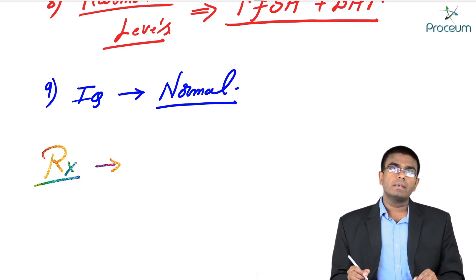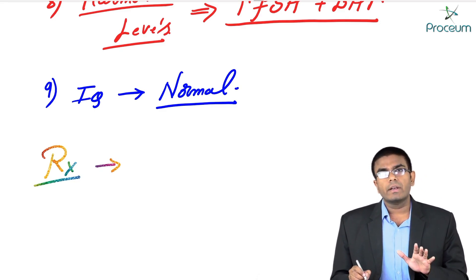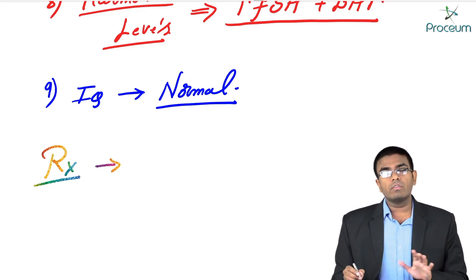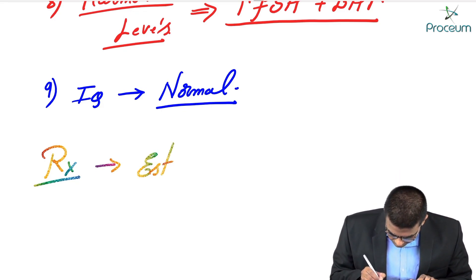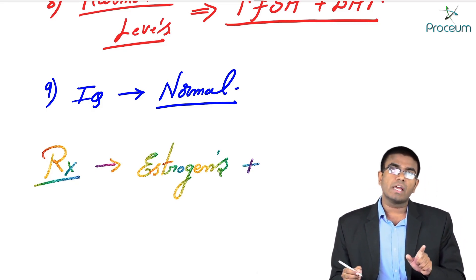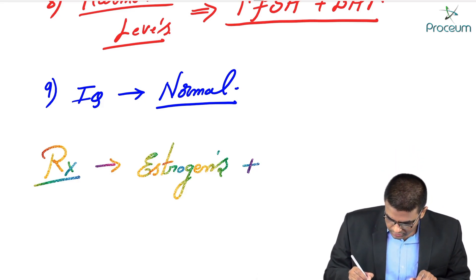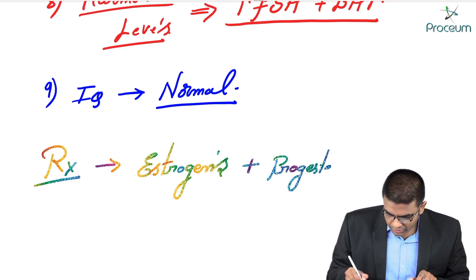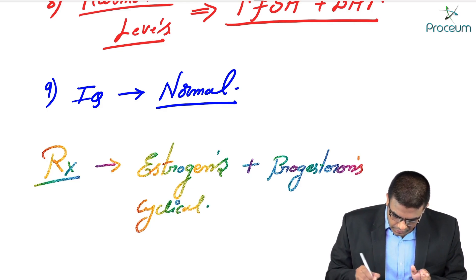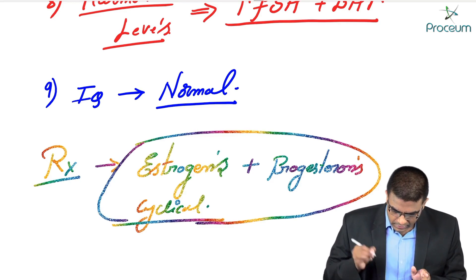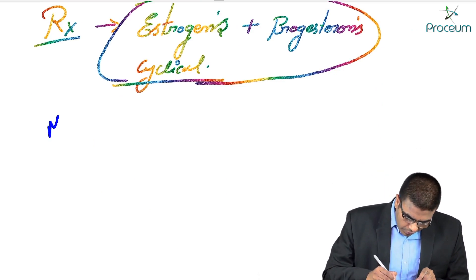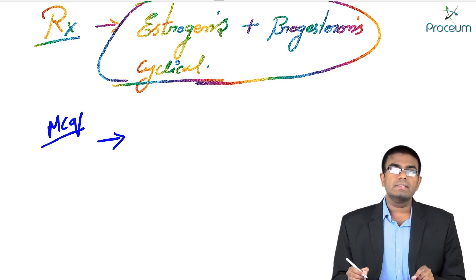For treatment: since these females do not have sufficient estrogens and androgens, we do hormone replacement. We give estrogens to this female, but we should never give estrogens alone because they cause endometrial hyperplasia and endometrial cancer. So estrogens are given in combination with progesterone — specifically cyclical estrogens followed by progesterone.